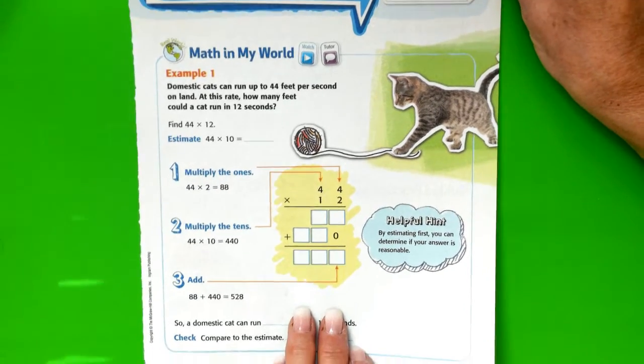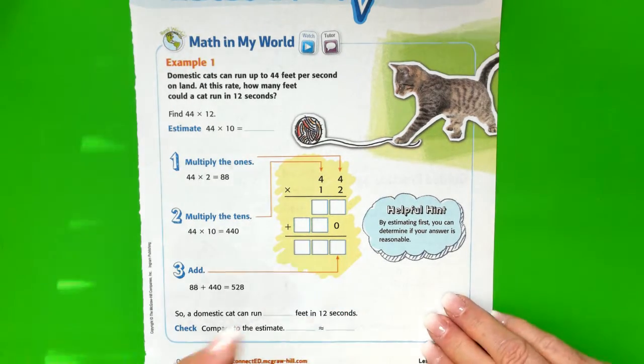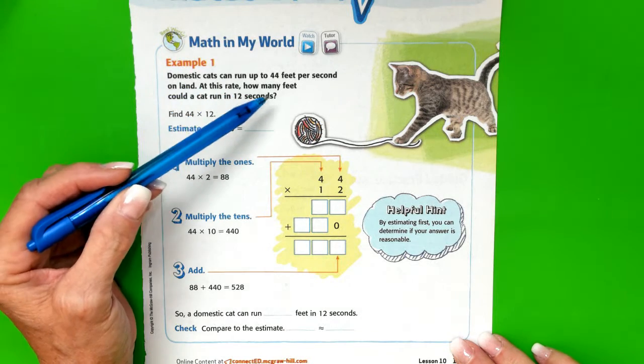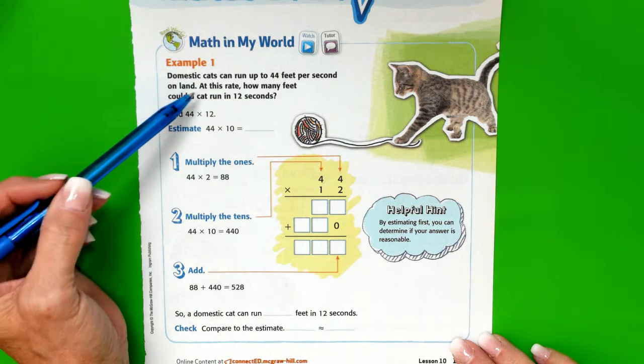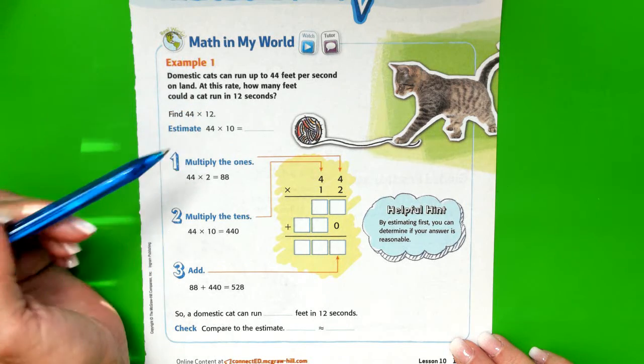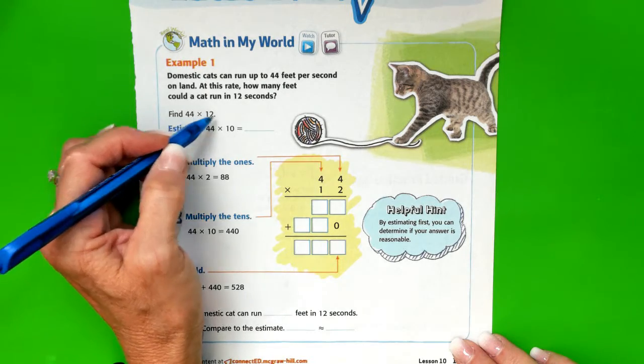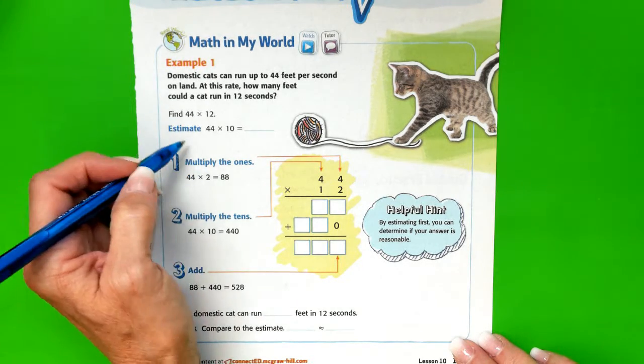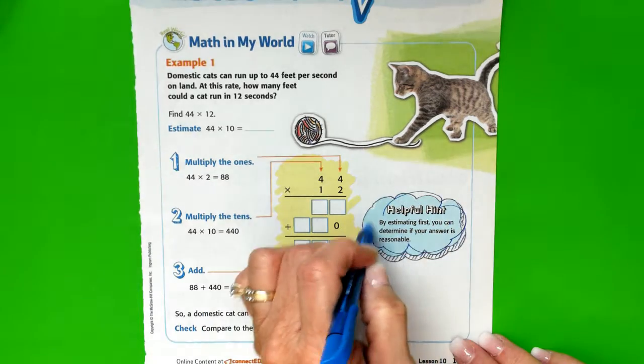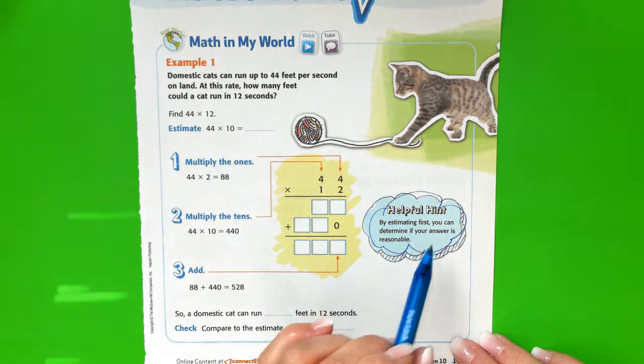Let's look at our example. It says domestic cats can run up to 44 feet per second on land. At this rate, how many feet could a cat run in 12 seconds? We're going to find 44 times 12. We're going to estimate first because, like our helpful hint suggests, by estimating first we can determine if our answer is reasonable.